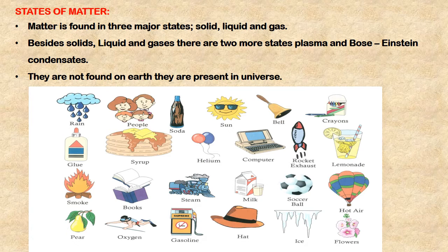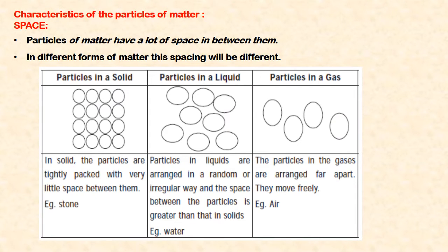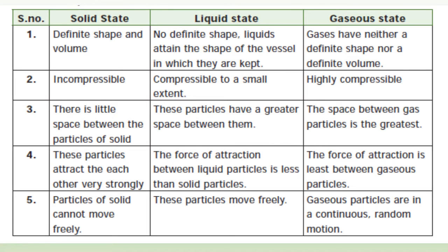Here are a few examples of solid, liquid, and gaseous states of matter. The particles of matter have a lot of space in between them. In different forms of matter, this spacing will be different. In a solid, the space is very less; in a liquid, it is moderate; and in a gaseous state, the space is more. This table shows you the difference between solid, liquid, and gaseous states of matter.